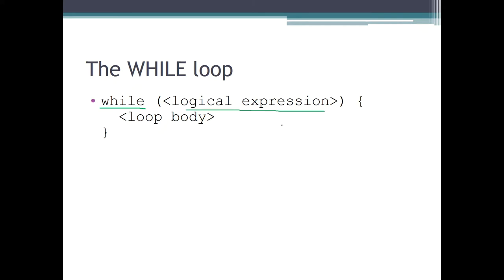If this logical expression is true, we go into the loop body and perform the commands located there. After we have performed all the commands of the loop body, we go back to the logical expression and start the next iteration. If the expression is still true, we again perform all the loop body commands. If the logical expression is false, we end execution of the while loop and continue to the next command in the program.